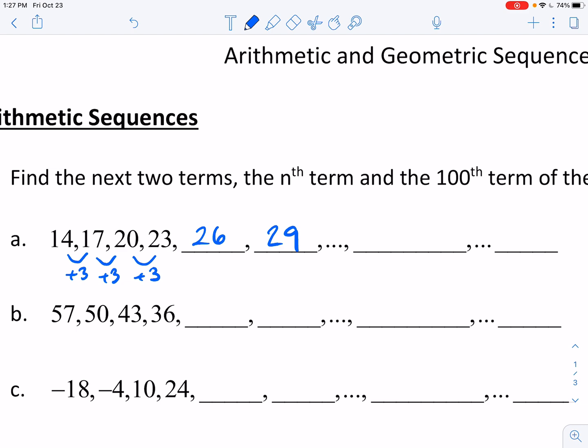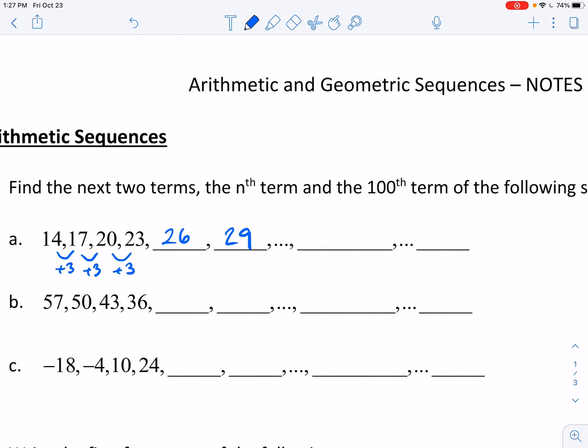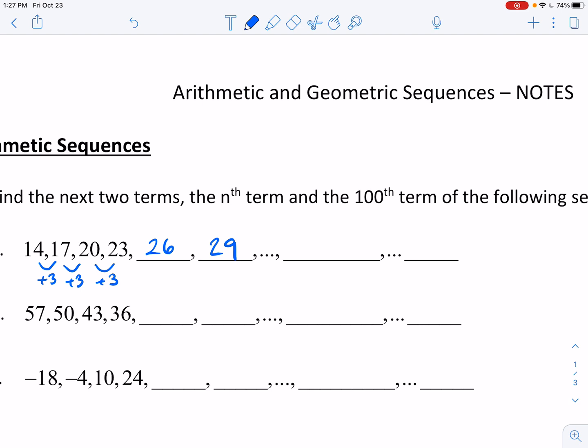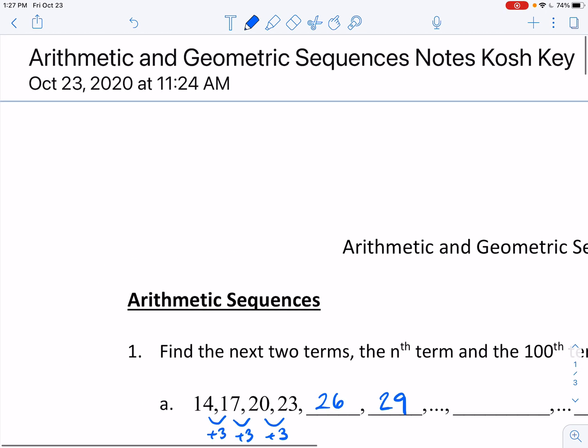And so that three is known as our common difference. So with an arithmetic sequence, what we'll find is that when it has a common difference there, that would have the same slope throughout these.